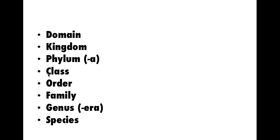Backwards: species, genus, family, order, class, phylum, kingdom, domain. A lot of people have come up with a mnemonic to remember this order, but don't realize that there's value in going this way as well.